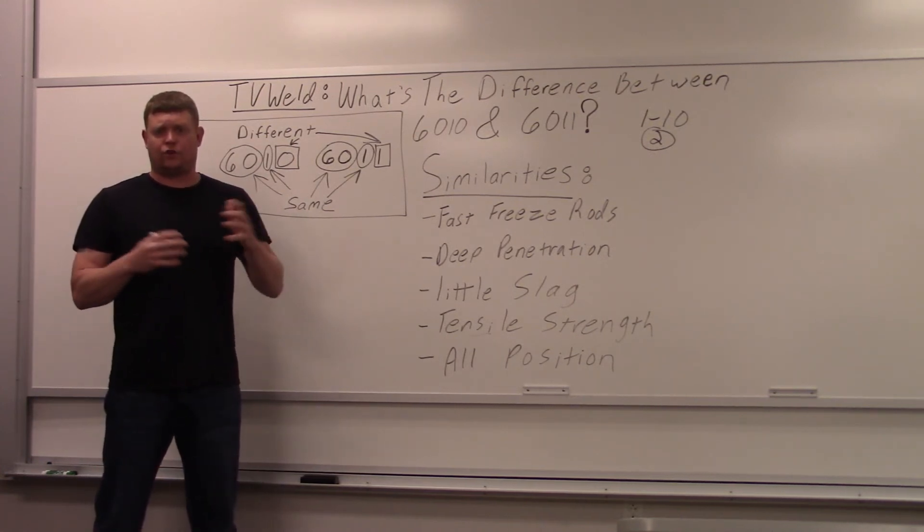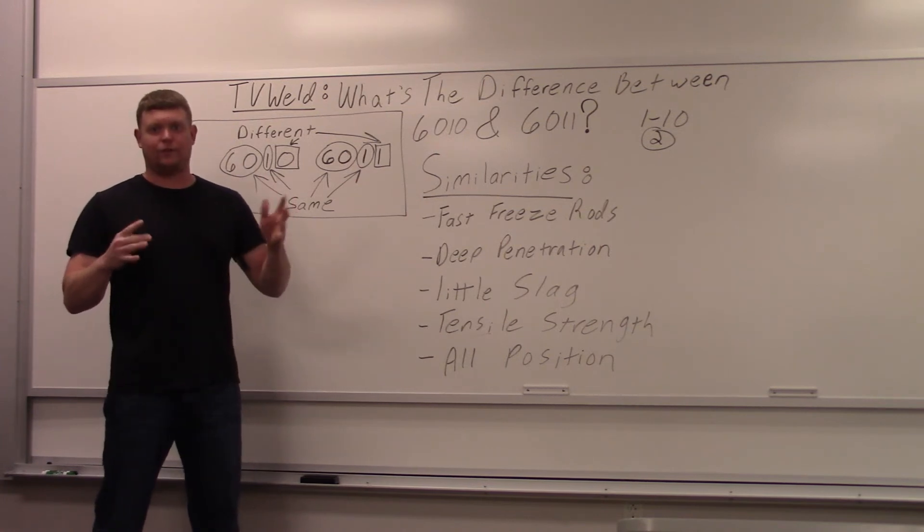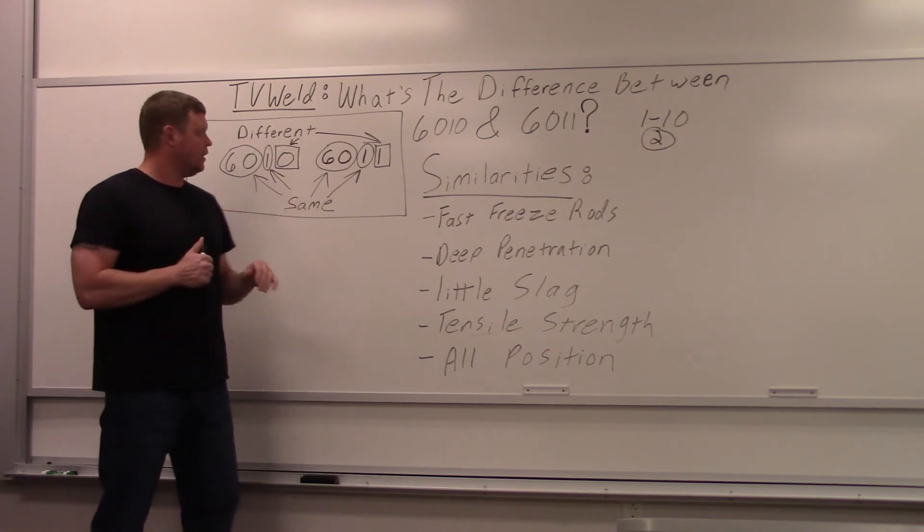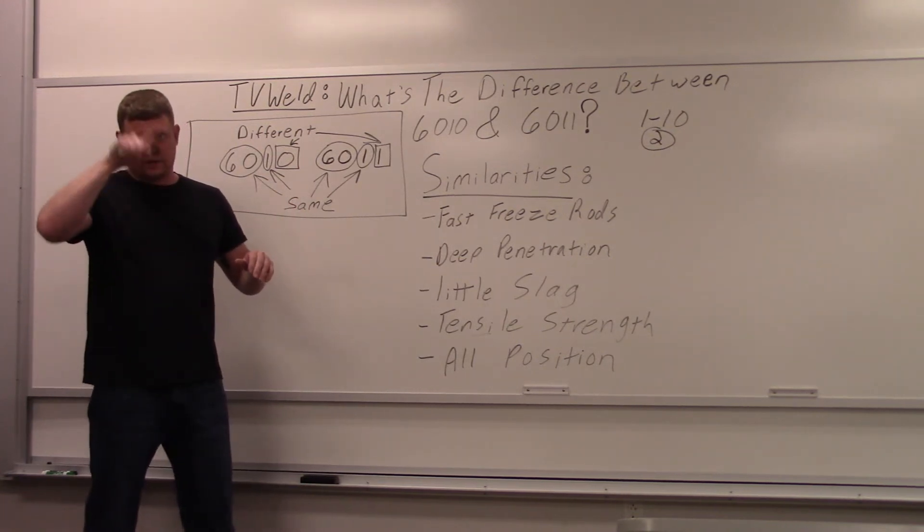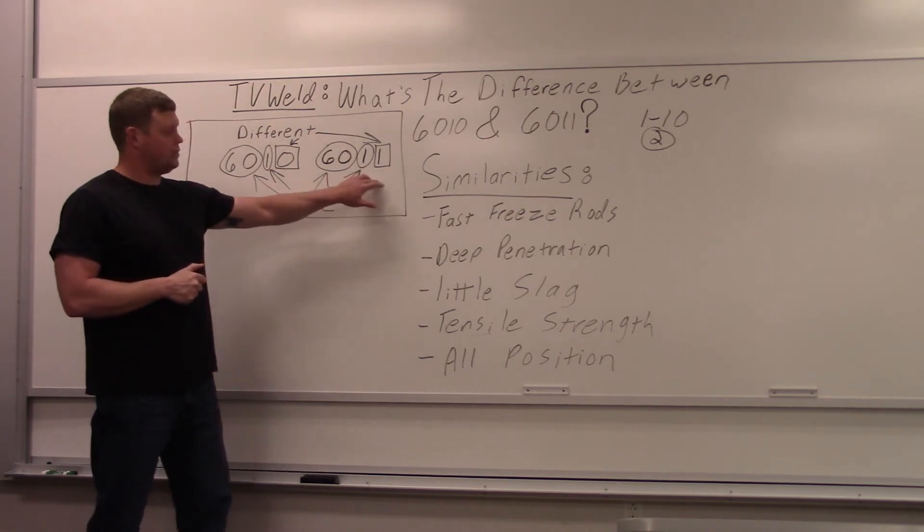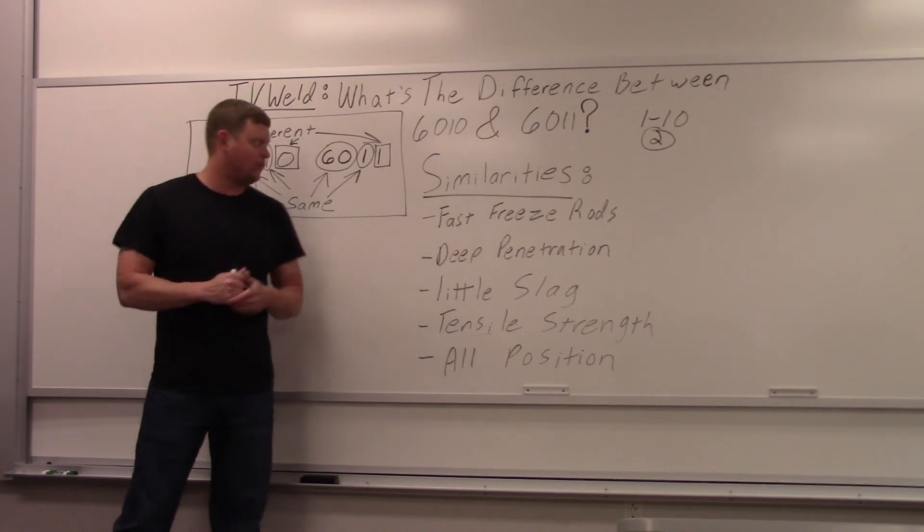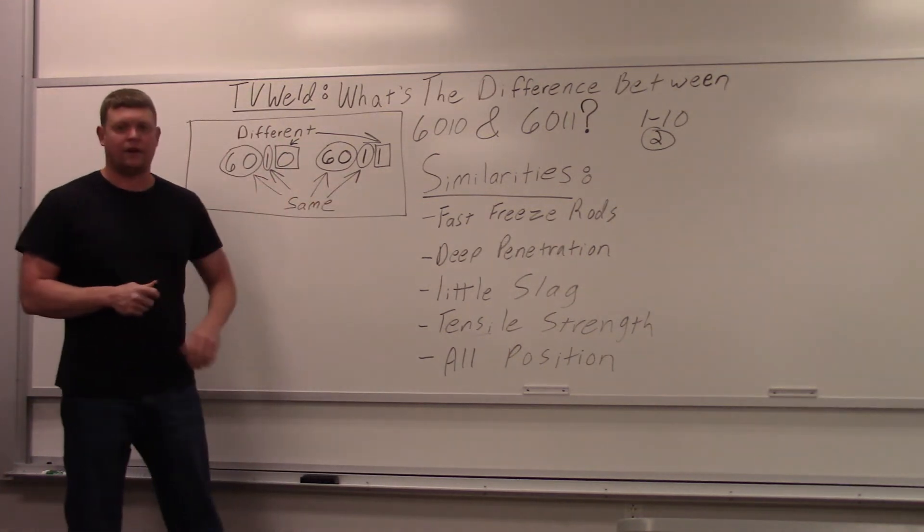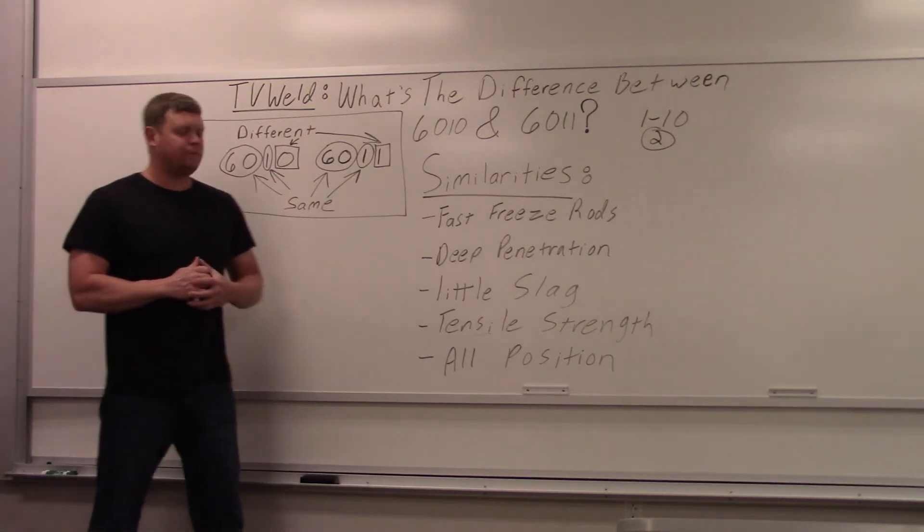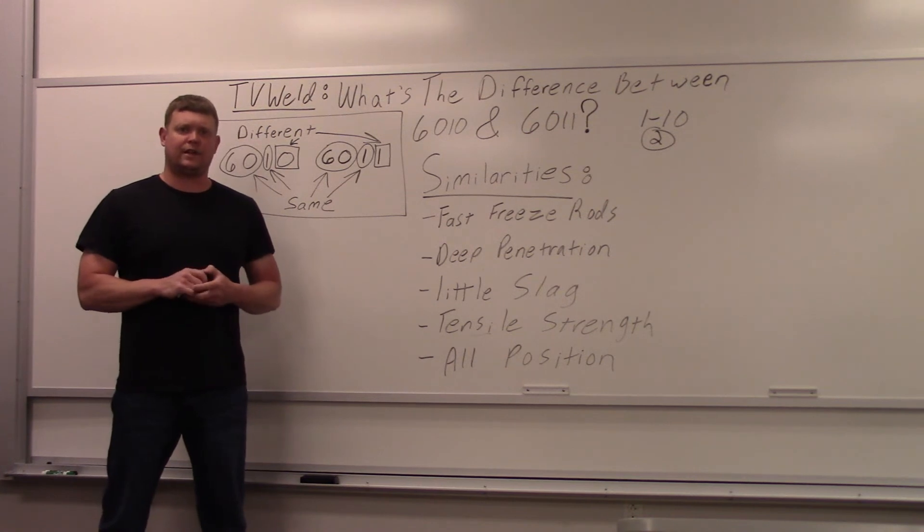So if you're using a garage welder and it's got a buzz box, which I'm going to do the next word of the week because if you don't know what a buzz box is, that's an AC running welder, and they buzz because the electricity is going back and forth in a sine wave, you'd want to use 6011, that's all. So I guess that would be the main thing to understand. If you have a buzz box here, you want to use 6011 over 6010. So hopefully that clears up the differences between 6010 and 6011, how few they are. Thanks for watching and subscribing to TV Weld, and we'll see you next time.